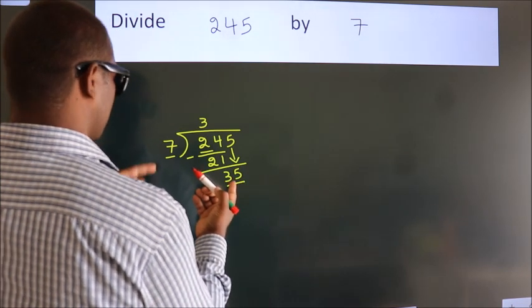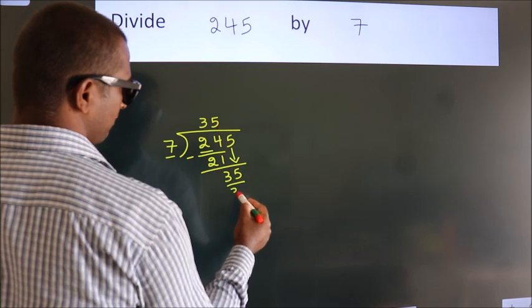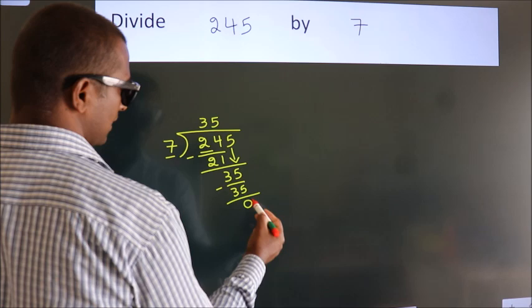When do we get 35 in the 7 table? 7 times 5 equals 35. Now we subtract and get 0.